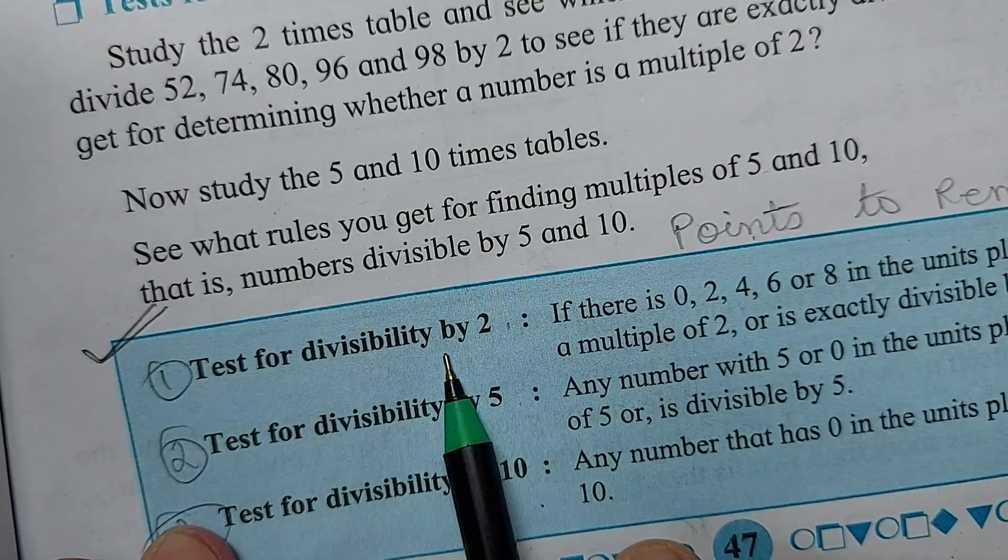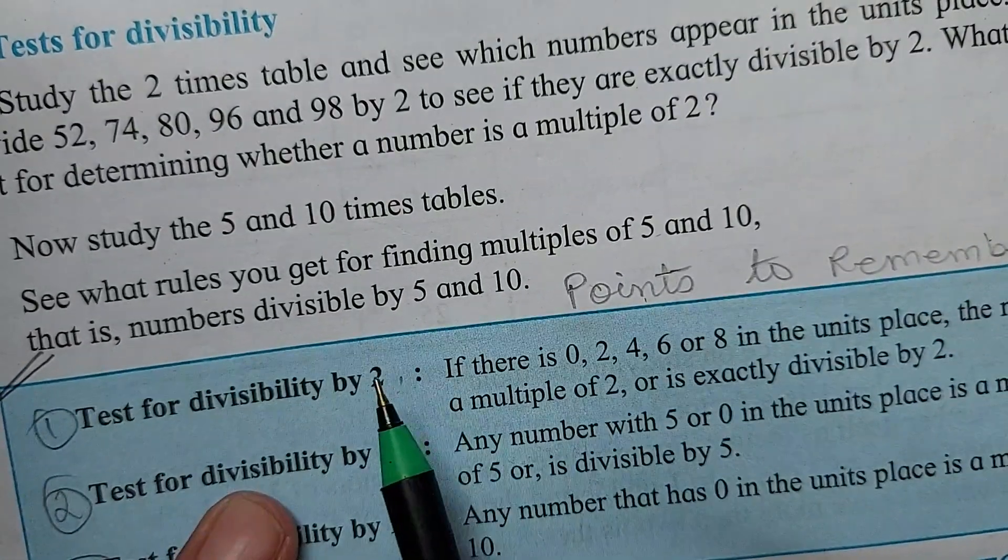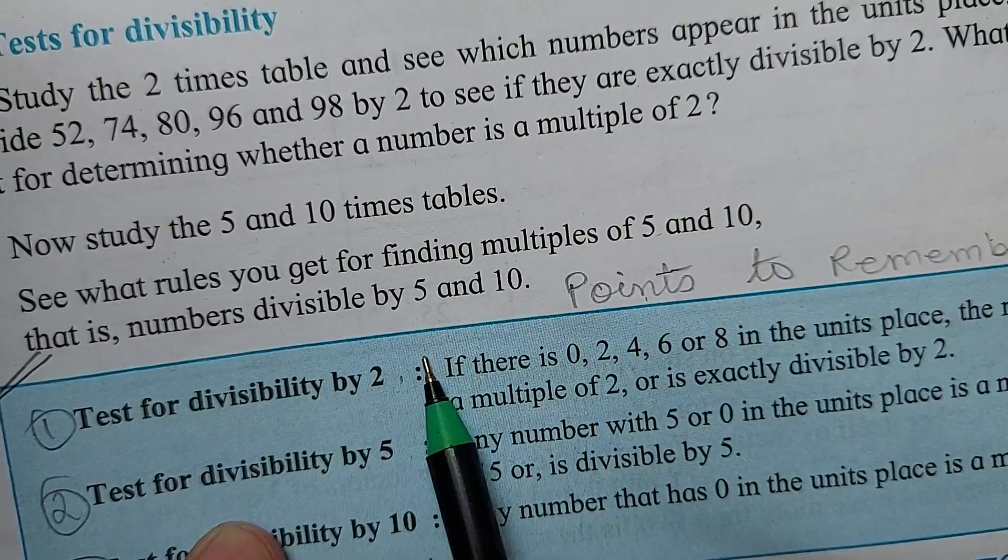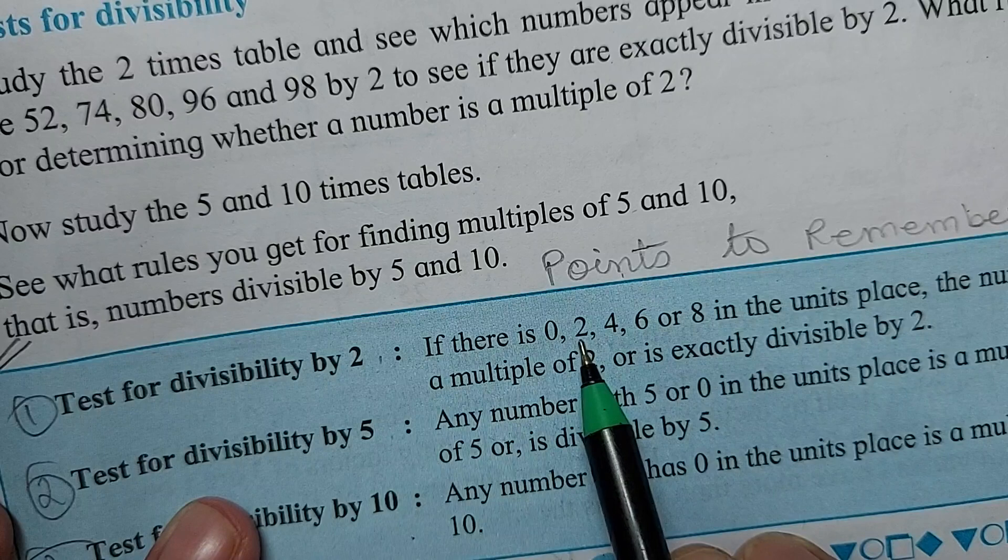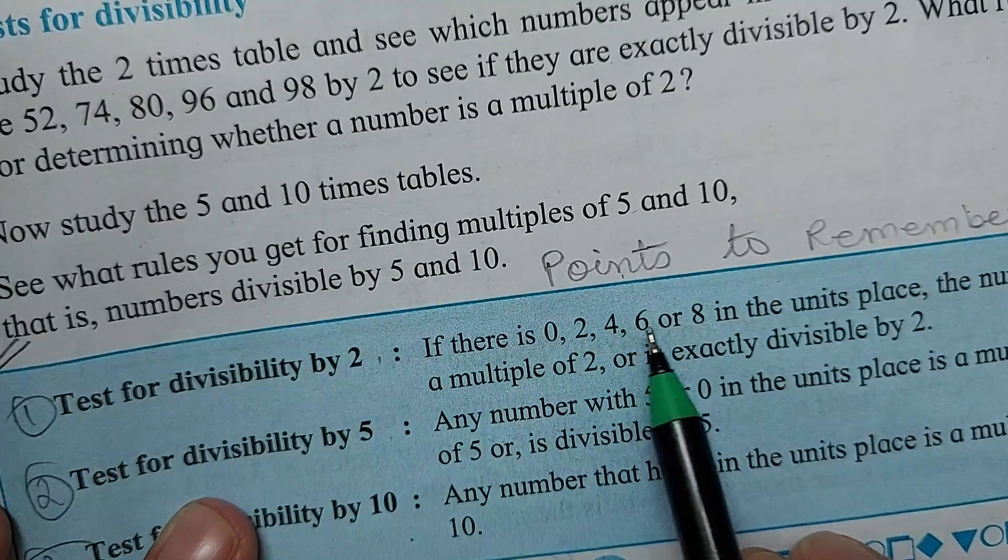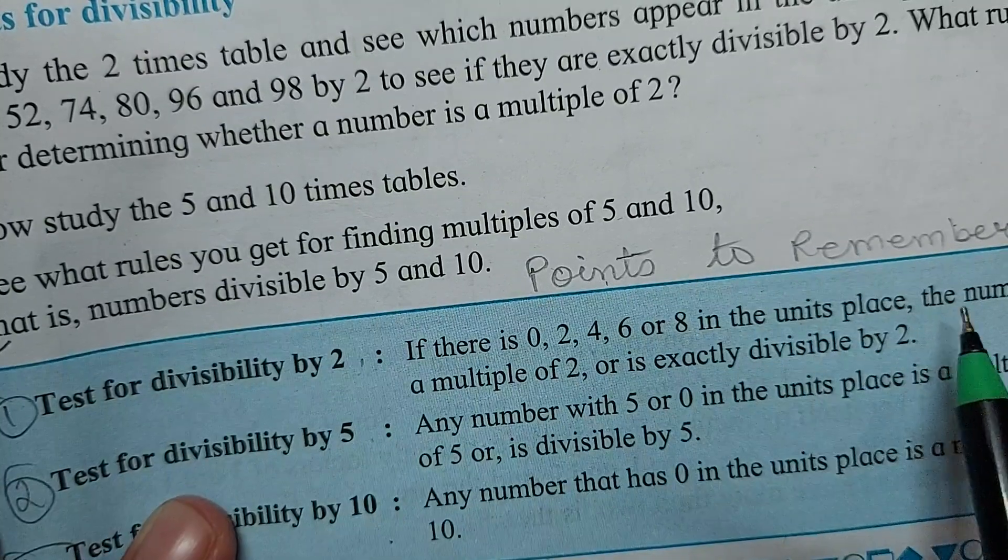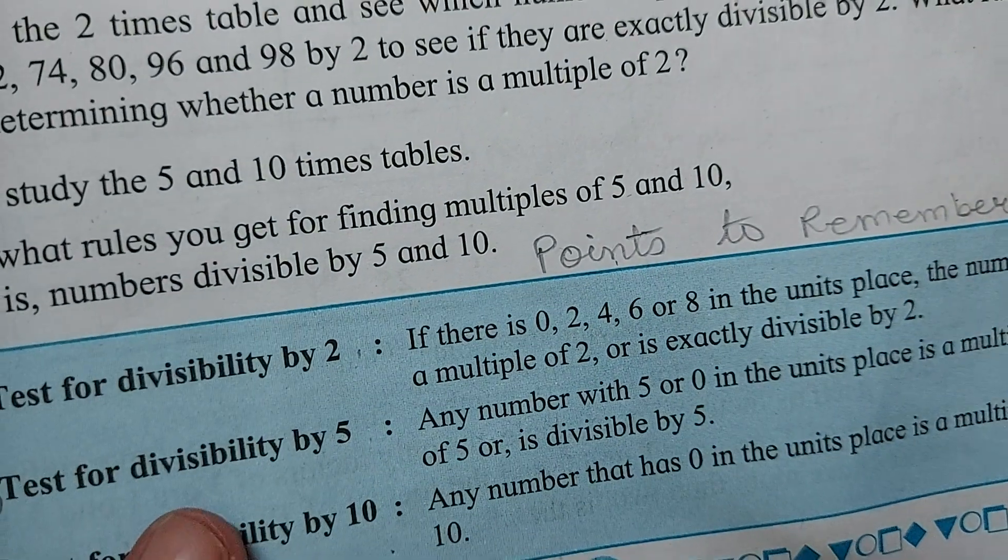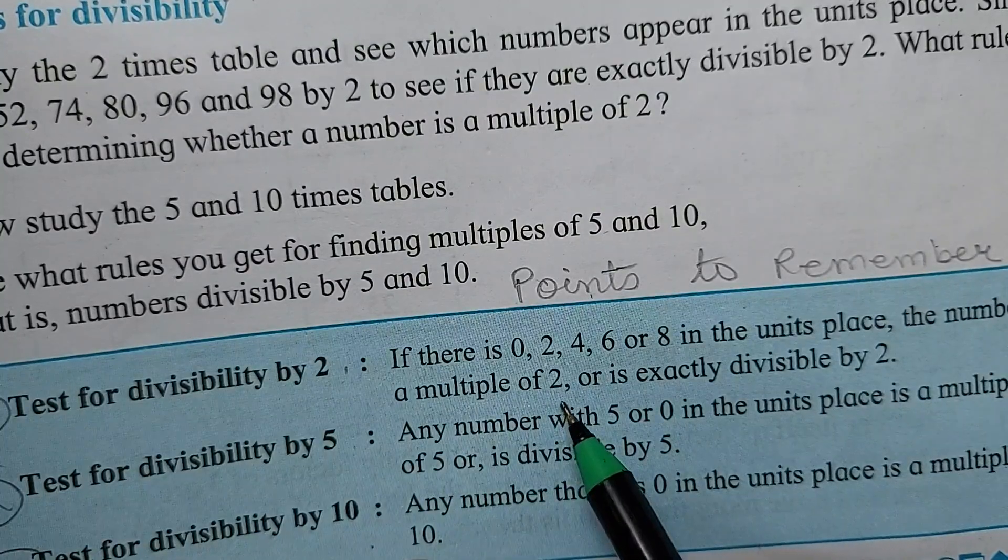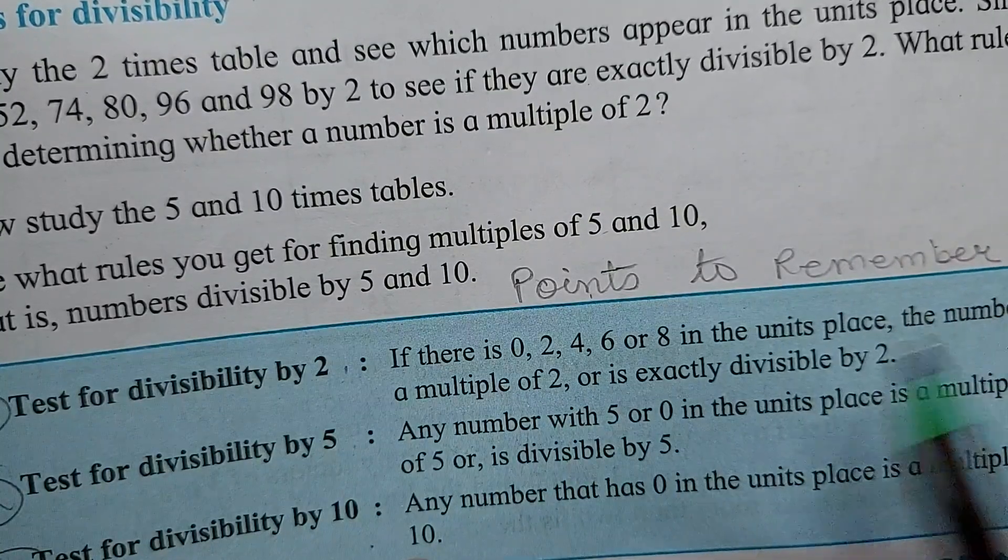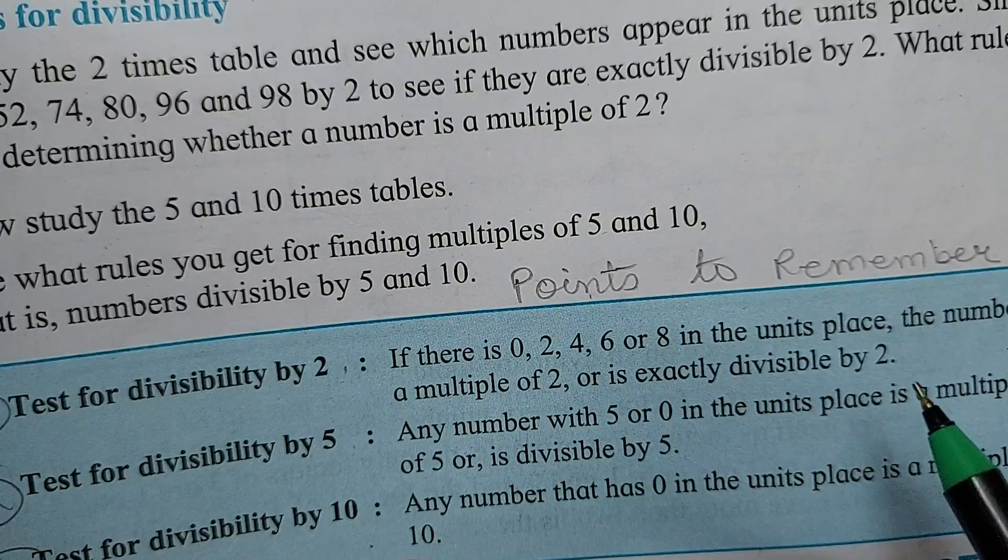Now test for divisibility by 2. Now what is the test? Now this is 2. 2 is an even number. If there is 0, 2, 4, 6 or 8 in the units place. In the units place where the last number, that is units place, a multiple of 2. The number is a multiple of 2 or is exactly divisible by 2.